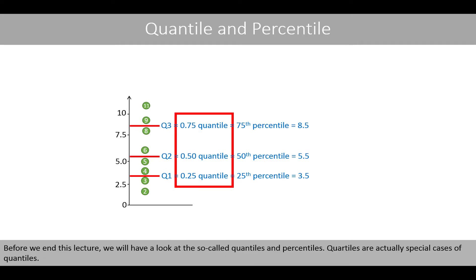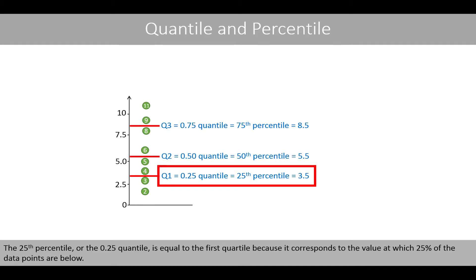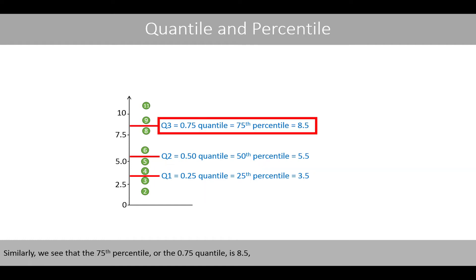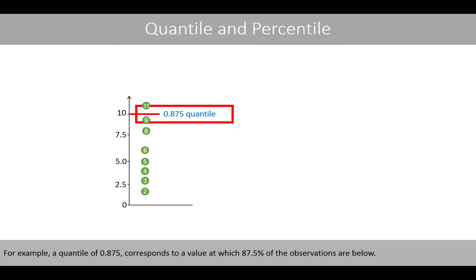Before we end this lecture, we'll have a look at the so-called quantiles and percentiles. Quartiles are actually special cases of quantiles. Percentiles are also special cases of quantiles, which divide the data into 100 equal parts. The percentile is commonly used to express the quantile as a percentage. The 25th percentile, or the 0.25 quantile, is equal to the first quartile because it corresponds to the value at which 25% of the data points are below. Similarly, the 75th percentile, or the 0.75 quantile, is 8.5, indicating that 75% of the observations are below this value. For example, a quantile of 0.875 corresponds to a value at which 87.5% of the observations are below.